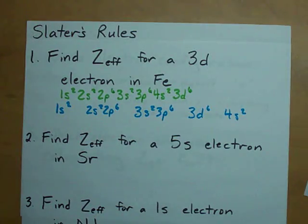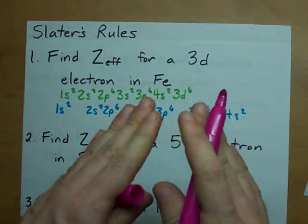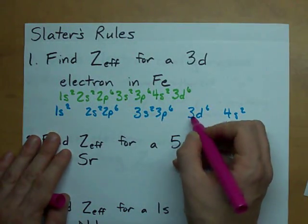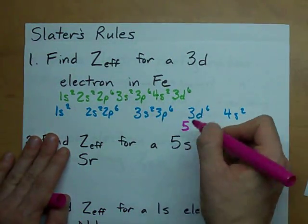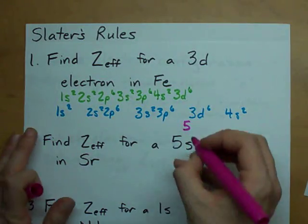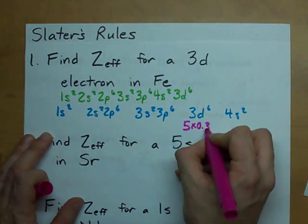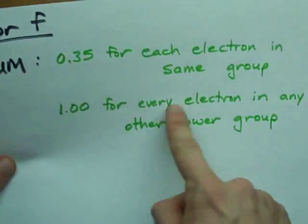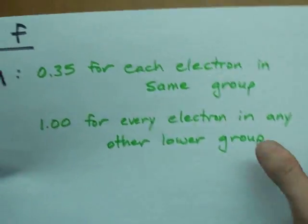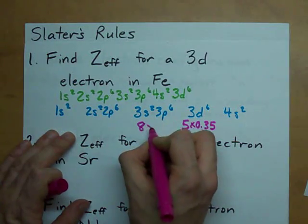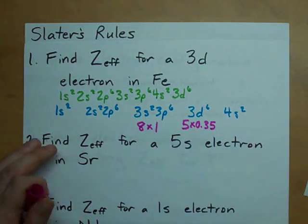0.35 in the same group, 1 in every lower group. Here's what I mean. We're doing it for a 3d electron. How many other electrons are in 3d? Five of them. There are six total. We're doing this for one of them. There are five other electrons. We deduct 0.35 for every single one of those.